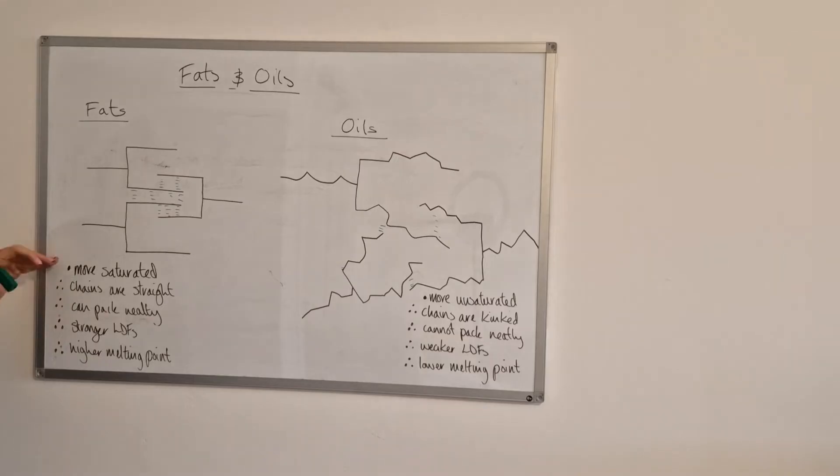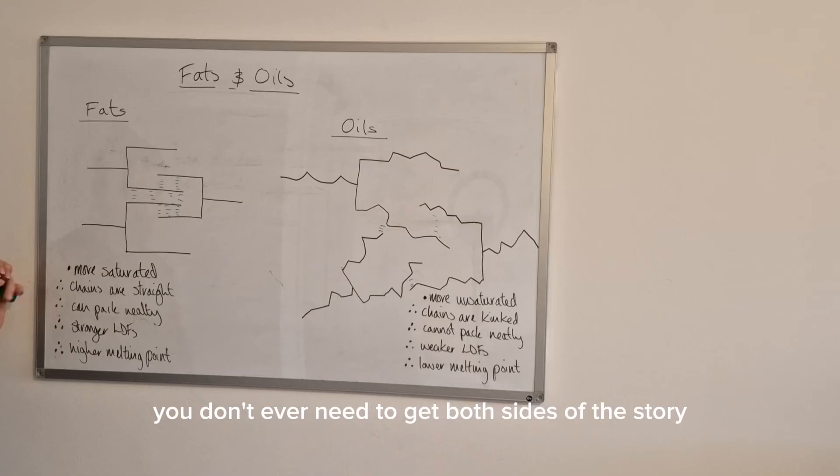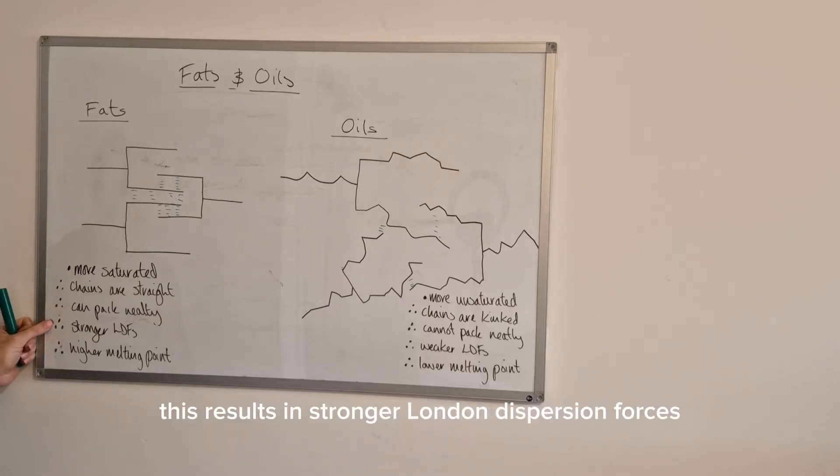This is the sort of process you want to go through when you're explaining the difference in melting point between fats and oils. You just pick one side or the other - you don't ever need to give both sides of the story. You would either say that fats are more saturated, therefore their hydrocarbon chains are straight, which means the molecules can pack neatly.